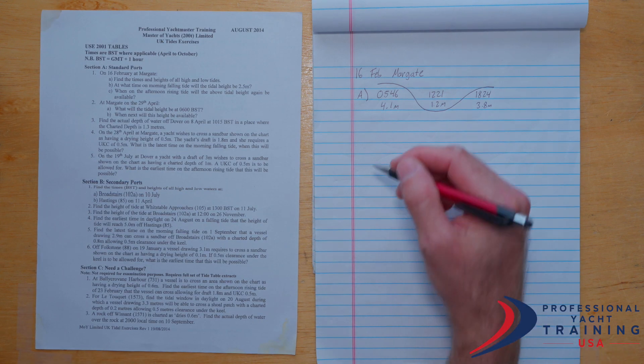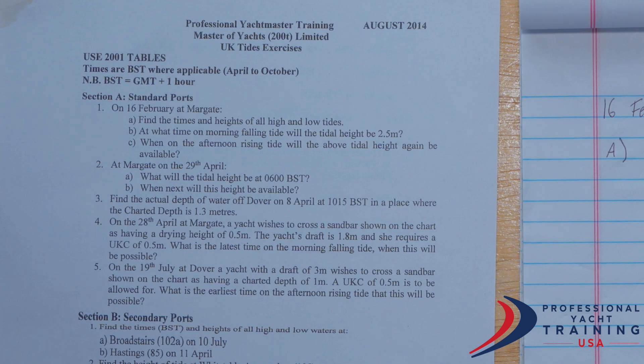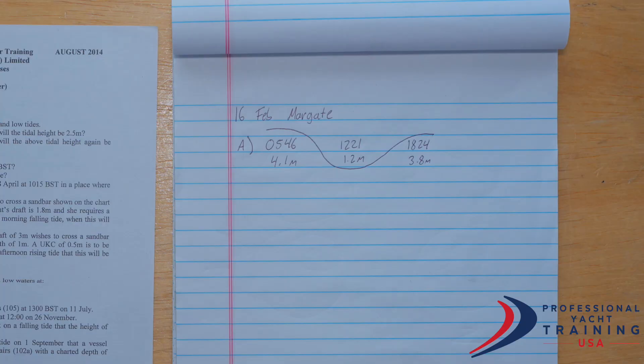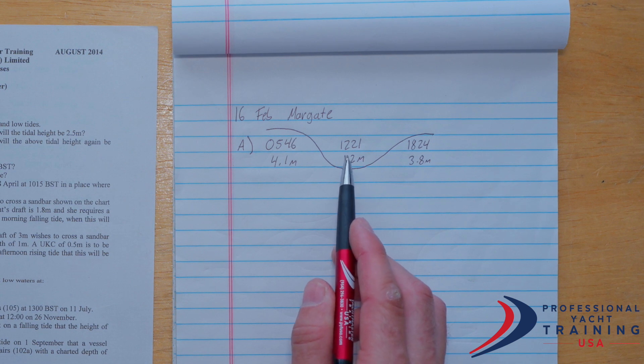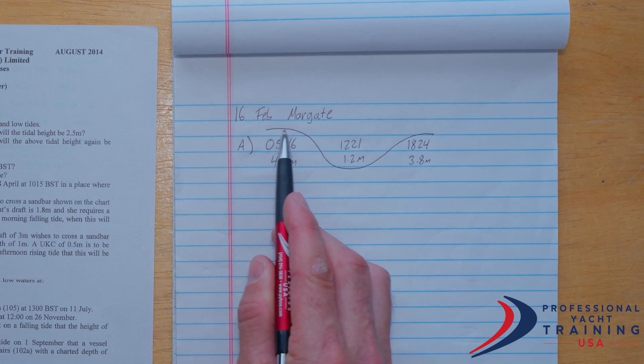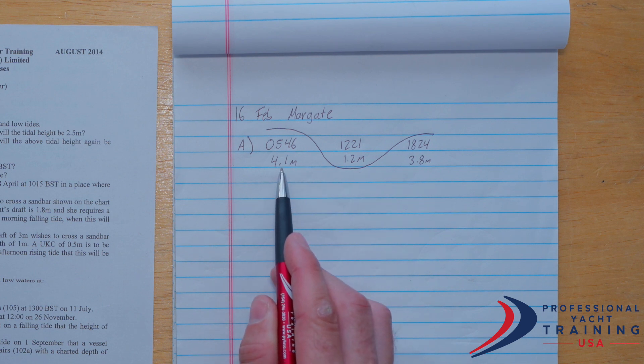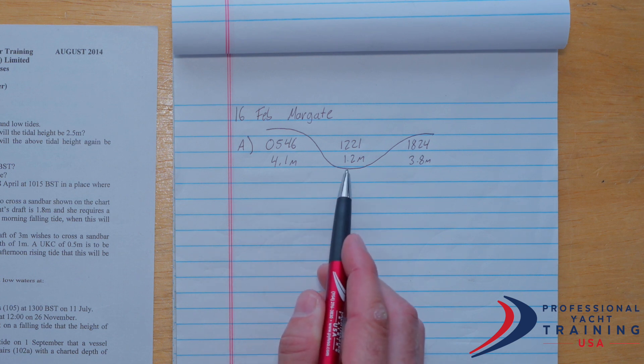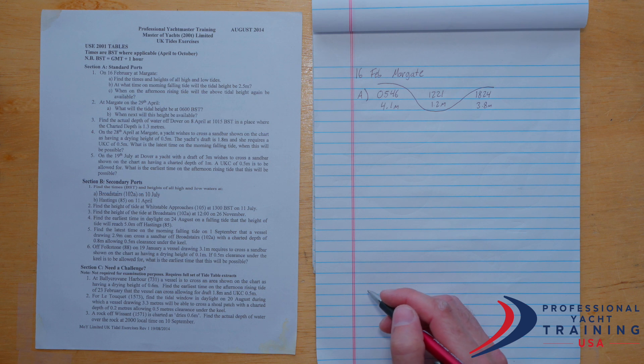And that there is going to be part A complete. For part B, they've asked us specifically on the morning falling tide when the tidal height will reach two and a half meters. So in the morning, that's going to be between 5:46 and 12:21. And technically that extends a little bit into the afternoon, but I think we can agree that this is the morning falling tide. And during that morning falling tide, the tidal height will go from 4.1 meters to 1.2 meters. And somewhere between those times, it'll hit two and a half meters. So that's what we want to find out.